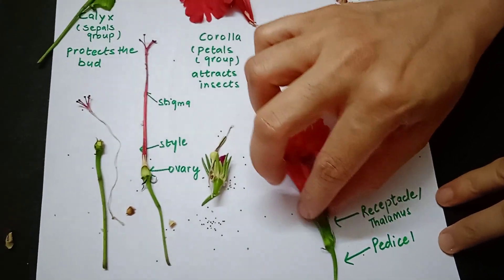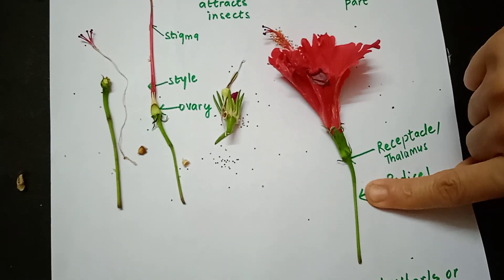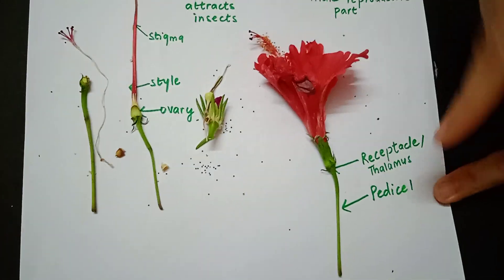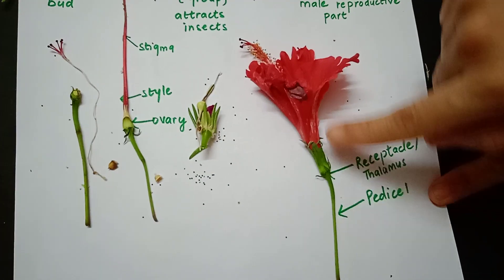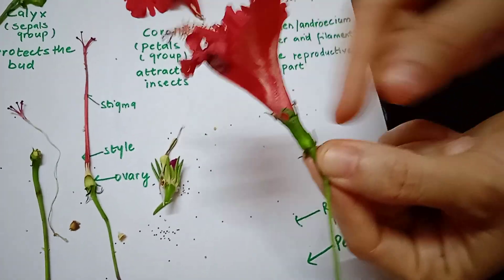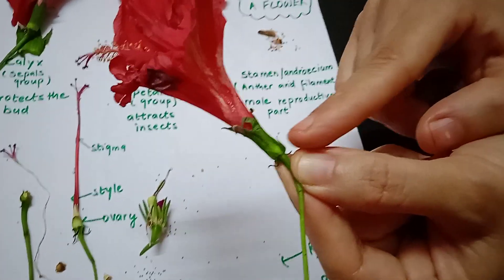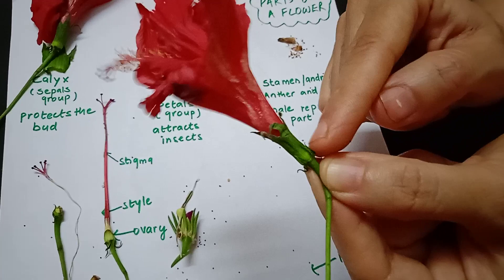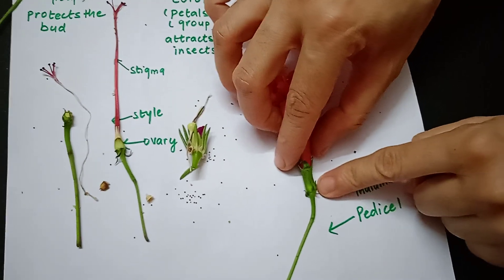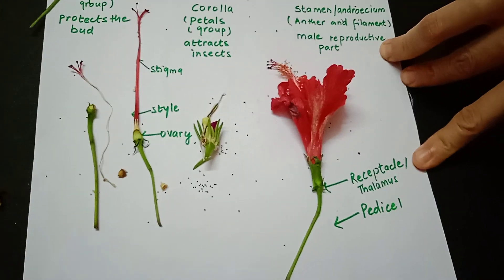The stalk of the flower — the dandi in Hindi — which you pluck along with the flower, is called the pedicel. Remember: pedals are at the bottom, so pedicel is at the bottom of the flower. The portion on which the whole flower rests is called the receptacle or thalamus — the flower is received by the receptacle.